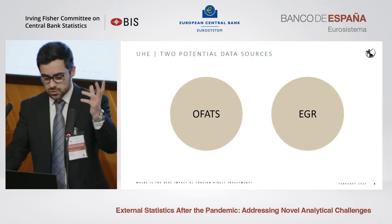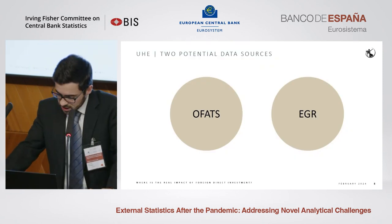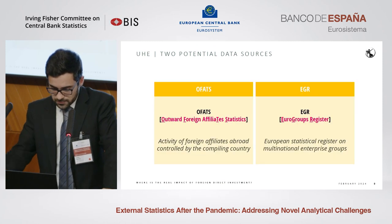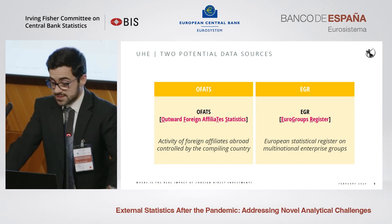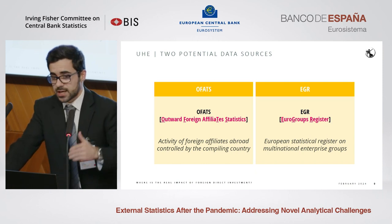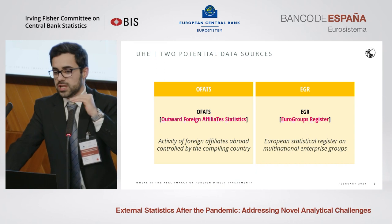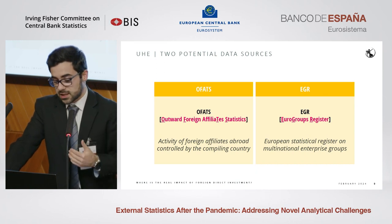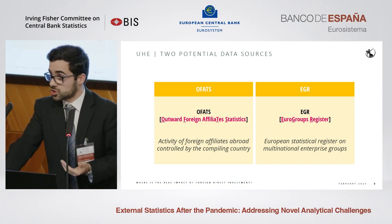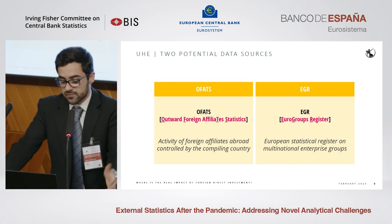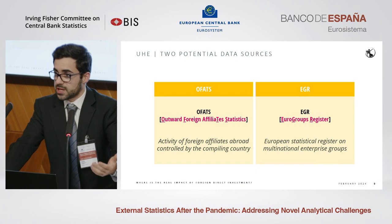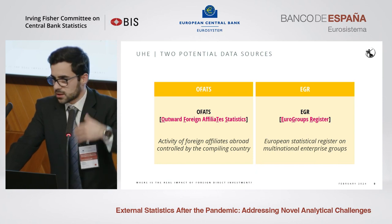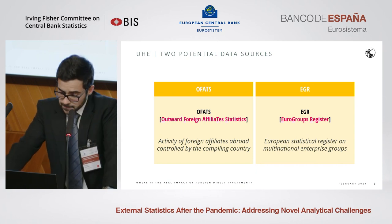Regarding the two data sources: in OFATS (outward foreign affiliate statistics) we have data on each foreign affiliate controlled by Portuguese entities, along with information on economic variables describing the activity of those enterprises, like turnover or employment data. In the EGR (Eurogroups register), we're talking about a European statistical register on multinational enterprise groups with a presence in the EU or EFTA area, where we also have information about economic activity — specifically, employment data by legal unit.